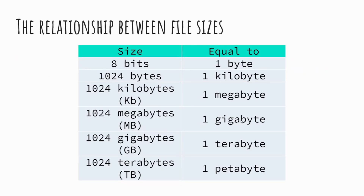Moving up, this table shows the relationship between units. Eight bits makes a byte; 1024 bytes makes one kilobyte; 1024 kilobytes makes one megabyte; 1024 megabytes makes one gigabyte; 1024 gigabytes makes one terabyte; and 1024 terabytes makes one petabyte.